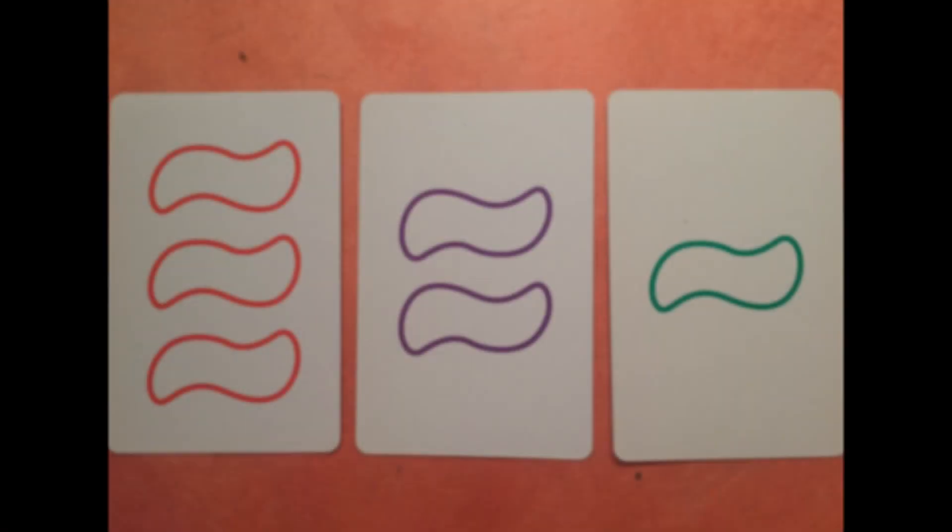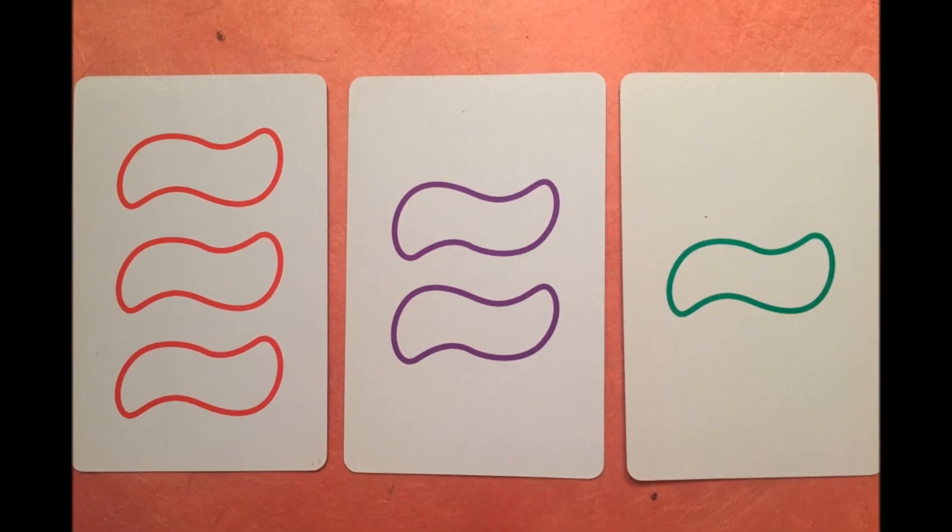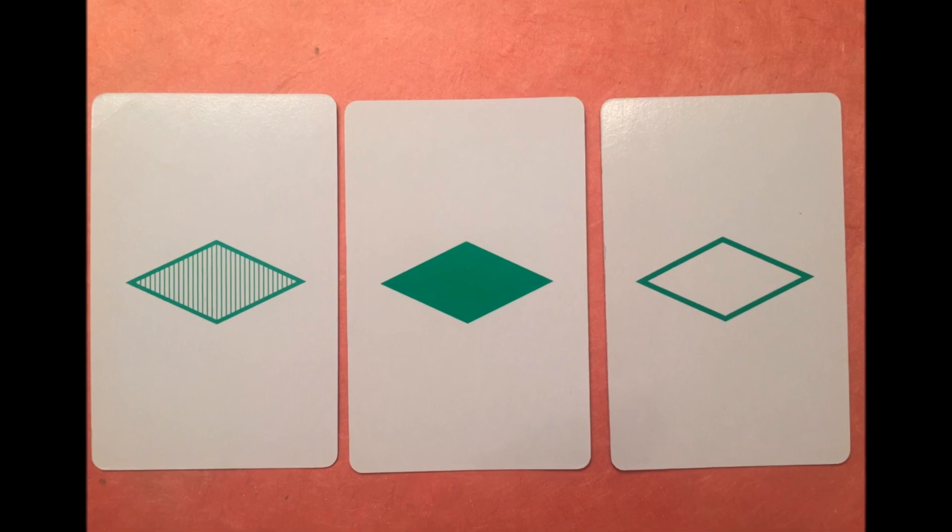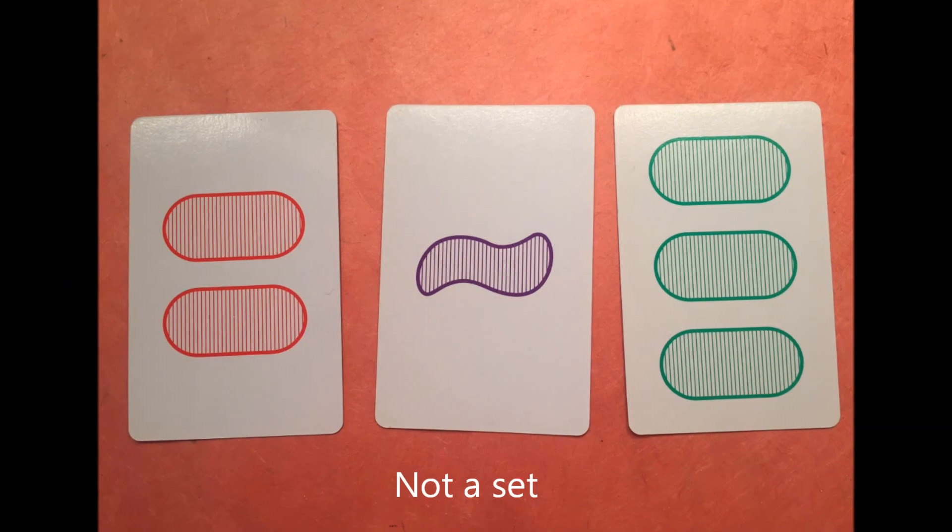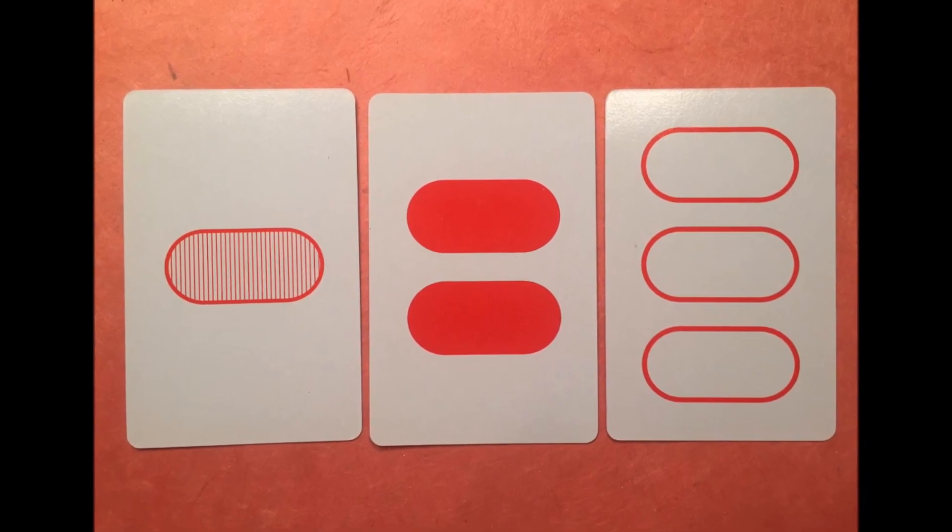So it comes with 80 cards, and the cards have different images on them. So they have squigglies and diamonds, and they have different colors and shadings. They have some ovals in purple, green, and red. And you'll find them shaded, filled, or empty.